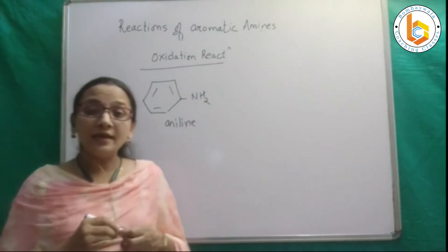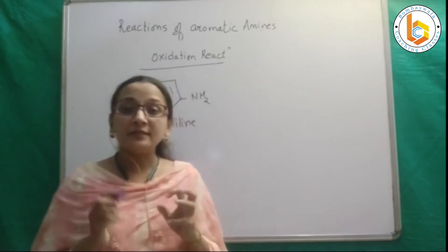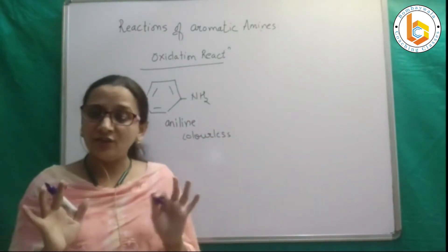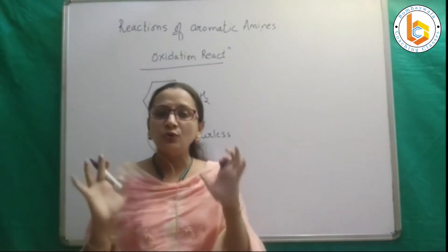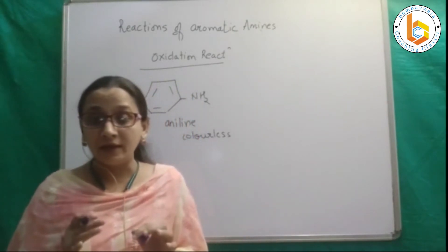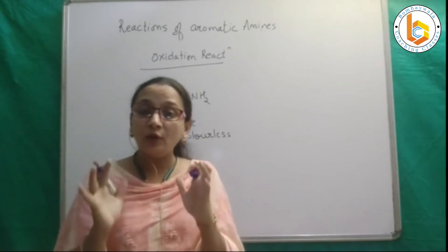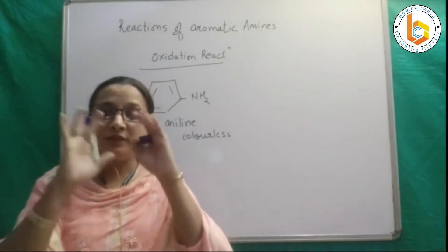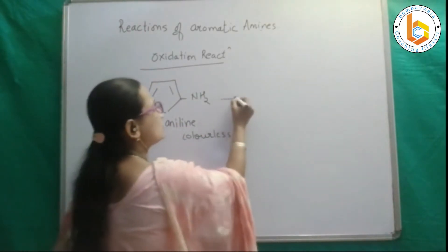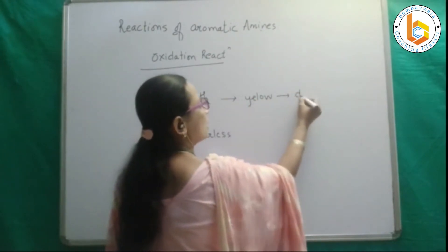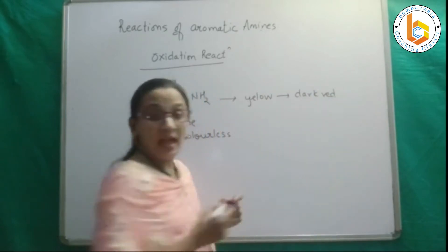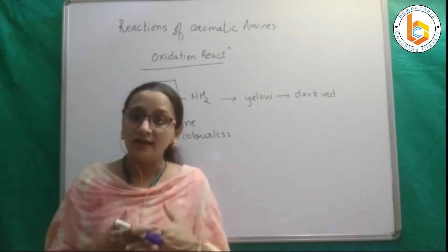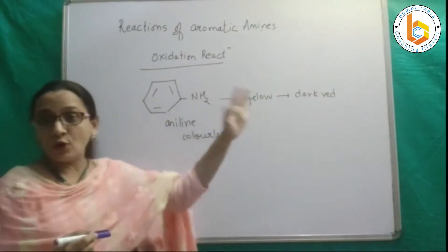Aniline, when synthesized, is colorless in nature. But if left, it undergoes aerial oxidation. So if you want to preserve aniline, you have to keep it in a well-closed container away from oxygen. In the presence of aerial oxygen, it first turns yellow and then becomes dark red in color. What we have in our lab is dark red because it just automatically gets oxidized — this is the slow process of oxidation.